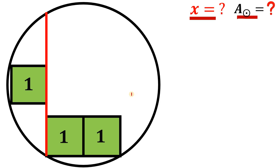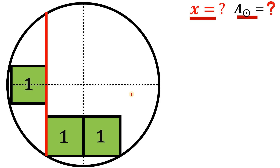To answer this kind of question, what we're going to do is draw its diameter like this. We do that because we will use the symmetry of this figure. Now, we'll use the information that the area of each square is one square unit, so the side length of each square equals one. Since we have two squares here, this length is two units.